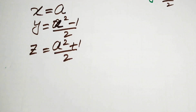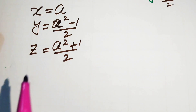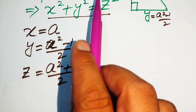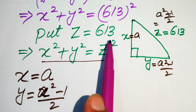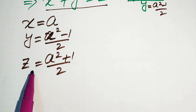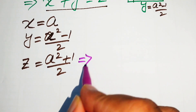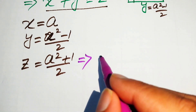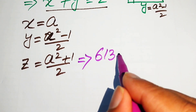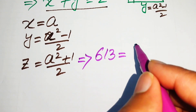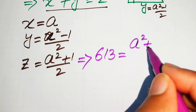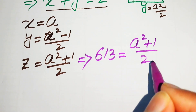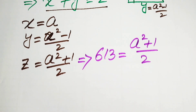Since the value of z is 613, we substitute it into z = (a² + 1)/2, giving us 613 = (a² + 1)/2.